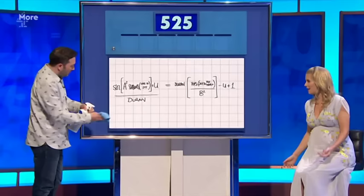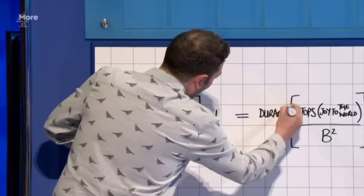You'd tidy it up, so you'd times by Duran. That's solving your problem on this side. And then on this side, of course, you'd have Duran squared — or Duran Duran, as they're more popularly known.